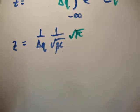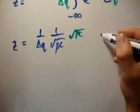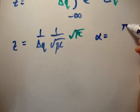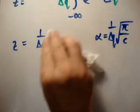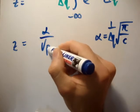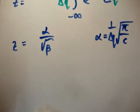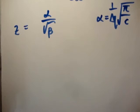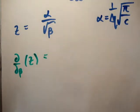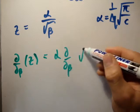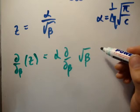Alright, so now we have the partition function. So in order to evaluate our average energy, we need the derivative of the partition function with respect to beta. So how are we going to do this? Well I'm going to call alpha, I'm going to let alpha be everything else. So alpha is going to be the square root of pi, the square root of c, and it's also going to be 1 over delta q. So that if we make that particular substitution, then what we have is alpha over square root of beta. That's pretty straightforward.